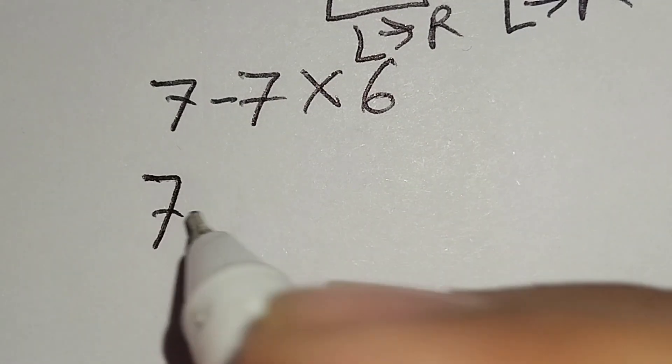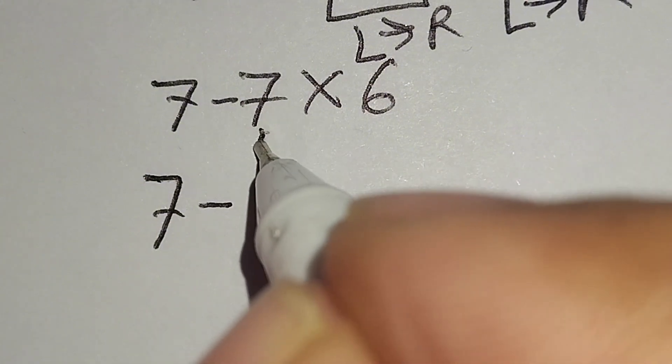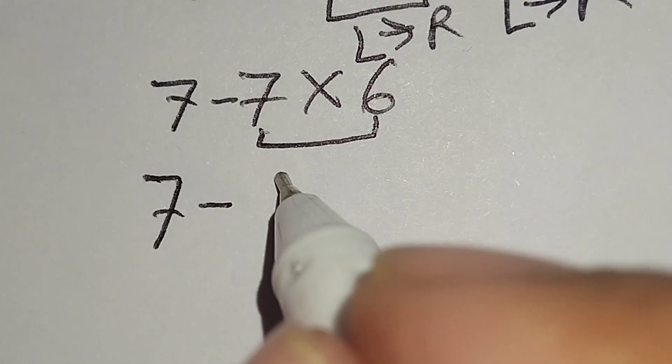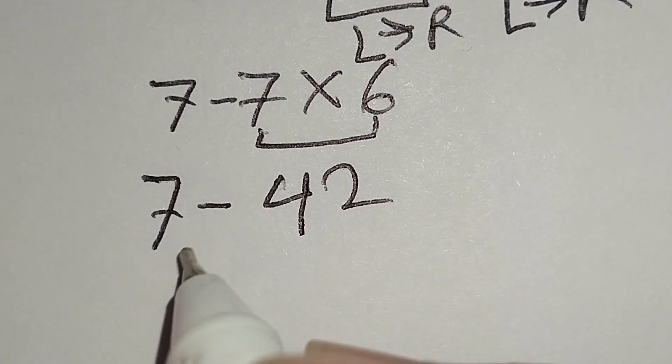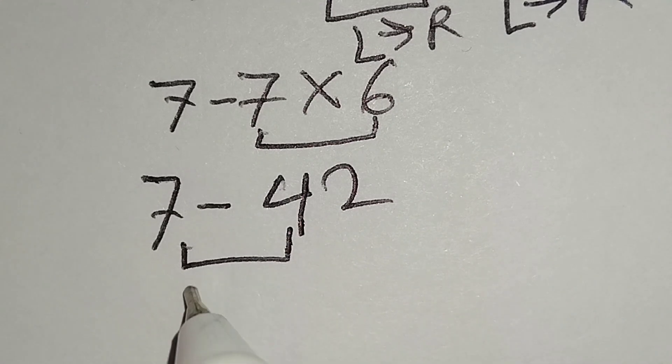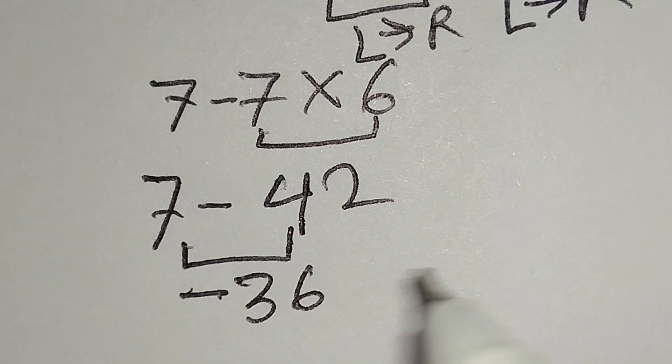Here, 7 minus 7 times 6 gives us 42. 7 minus 42 gives us negative 36, and this is the correct answer.